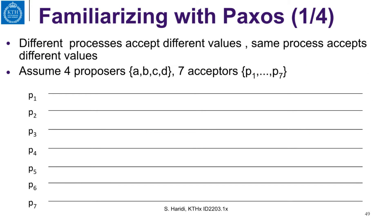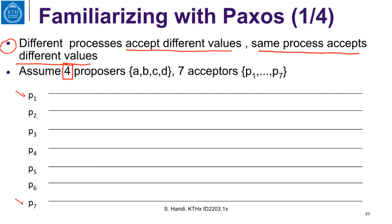Now let us continue getting familiar with Paxos. This example shows that different acceptors can accept different values, and the same acceptor can accept different values. Assume we have four proposers — A, B, C, and D — and seven acceptors, P1 through P7. To get a value chosen, it must be accepted by four acceptors, since that constitutes a majority.